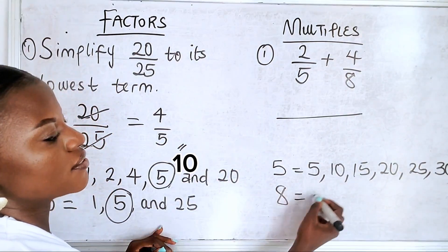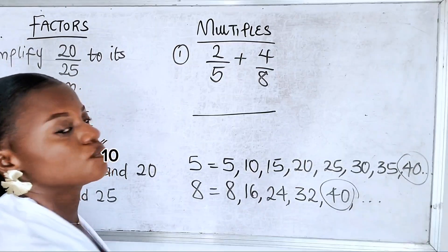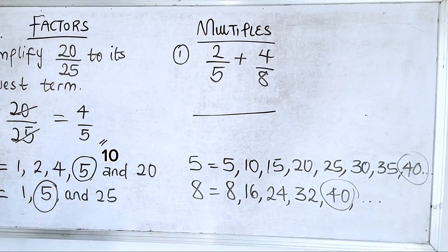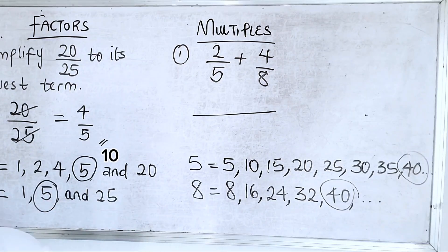And then for 8, the multiples are 8, 16. The lowest common multiple here is 40. I'm doing this for people who do not have an idea.